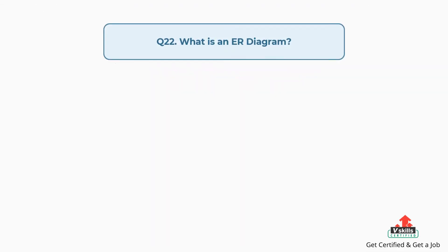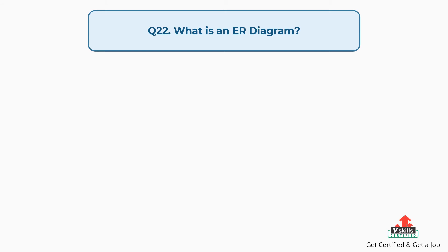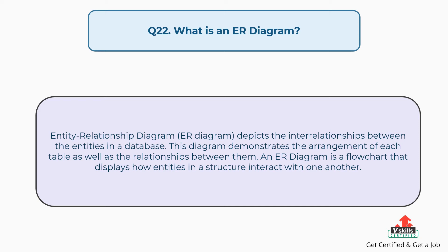Question number twenty-two: What is an ER diagram? An entity relationship diagram depicts the interrelationships between the entities in a database. This diagram demonstrates the arrangement of each table as well as the relationships between them. An ER diagram is a flowchart that displays how entities in a structure interact with one another.